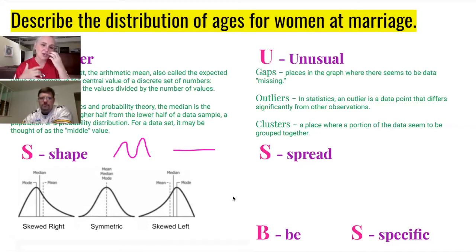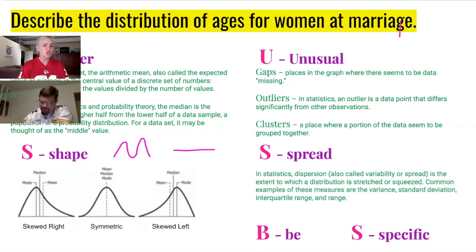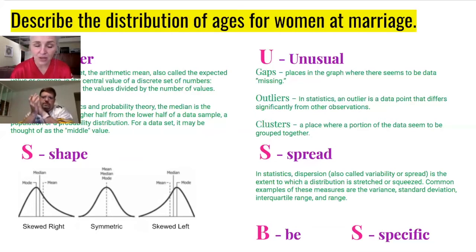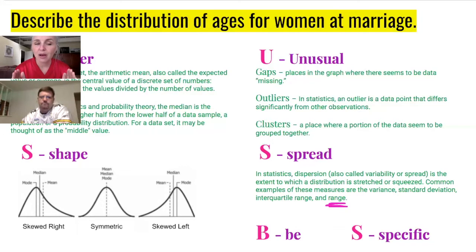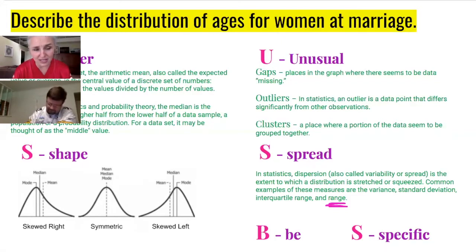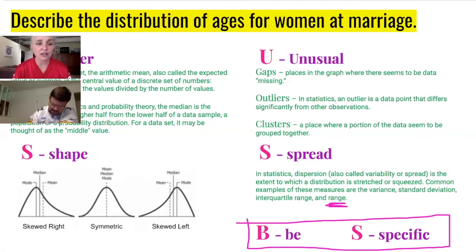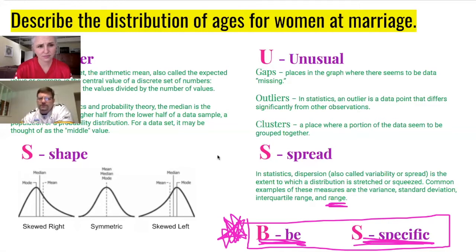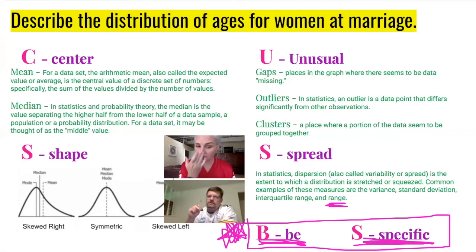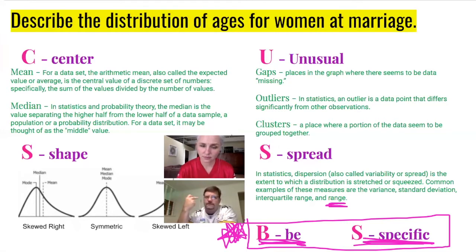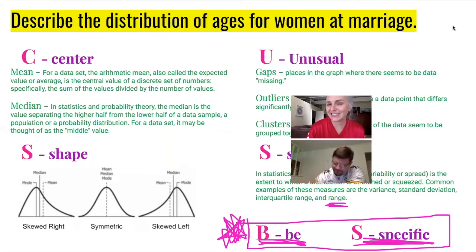Then you want to talk about the spread of the data, also known as variability. For now the only spread you know is the range. But we're going to talk about standard deviation and interquartile range — really important measures of variability. Potentially the most important part of all this: statistics is all well and good, but if nobody understands what you're talking about, you've wasted your breath. Tell us what the graph means in the context of the problem.